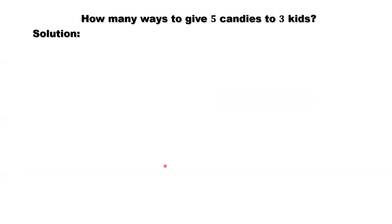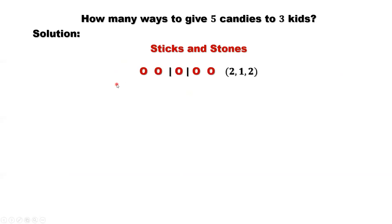First, we introduce a method called sticks and stones. We have five candies here — consider five candies as five stones. We use two sticks to divide five candies into three groups. The first group is on the left-hand side of the first stick. The second group is in between the two sticks. The last group is on the right-hand side of the second stick.